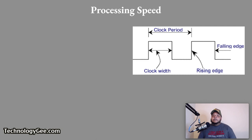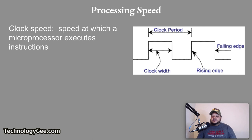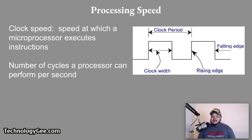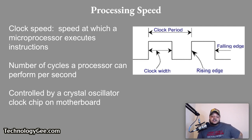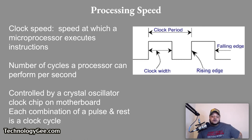Processing speeds, also known as clock speeds, is the speed at which a microprocessor executes instructions — that is, the number of cycles a processor can perform per second. The processing speed is controlled by the crystal oscillator clock chip on the motherboard. Each combination of a pulse and reset is a clock cycle. Looking at the diagram, from where the signal rises at the top to where it rises again is one clock cycle.